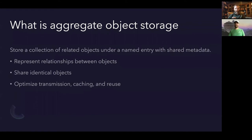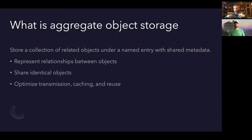So what do we mean when we talk about aggregate object storage? The idea is that we want to store a collection of related objects under a named entry with a single shared piece of metadata. We want to represent a group of objects as a single thing and represent the relationships between those objects. As a bonus, when aggregates share overlapping objects, we want to share those objects rather than constantly copying them, which optimizes for transmission, caching, and reuse.